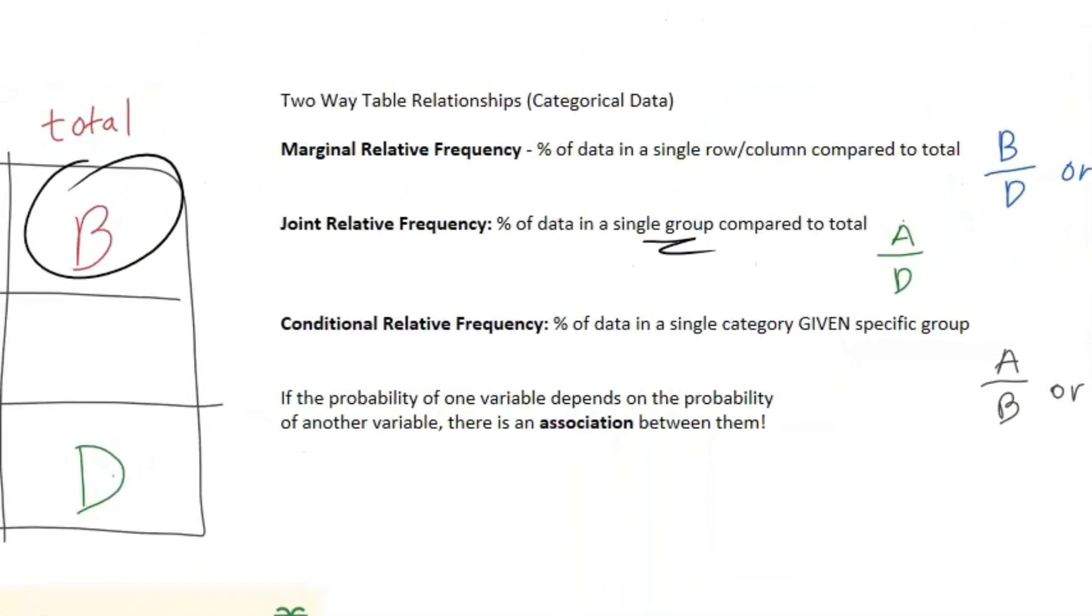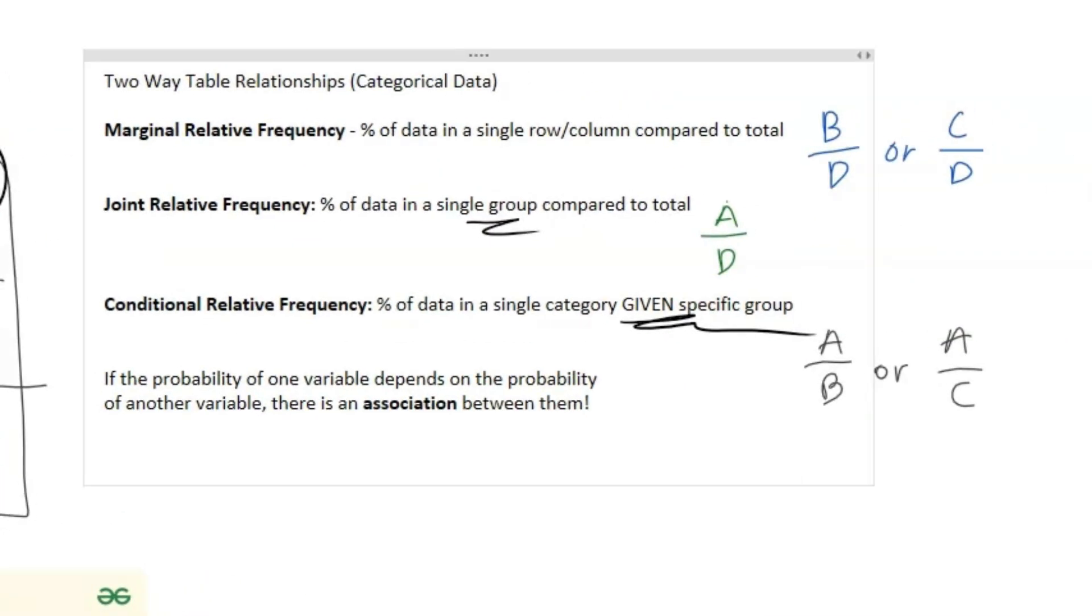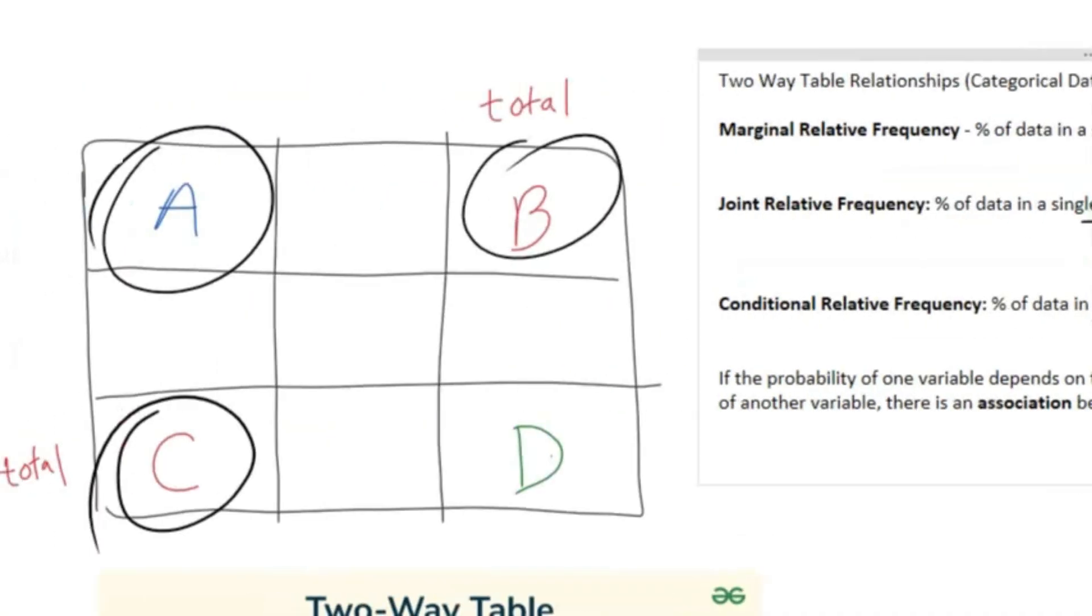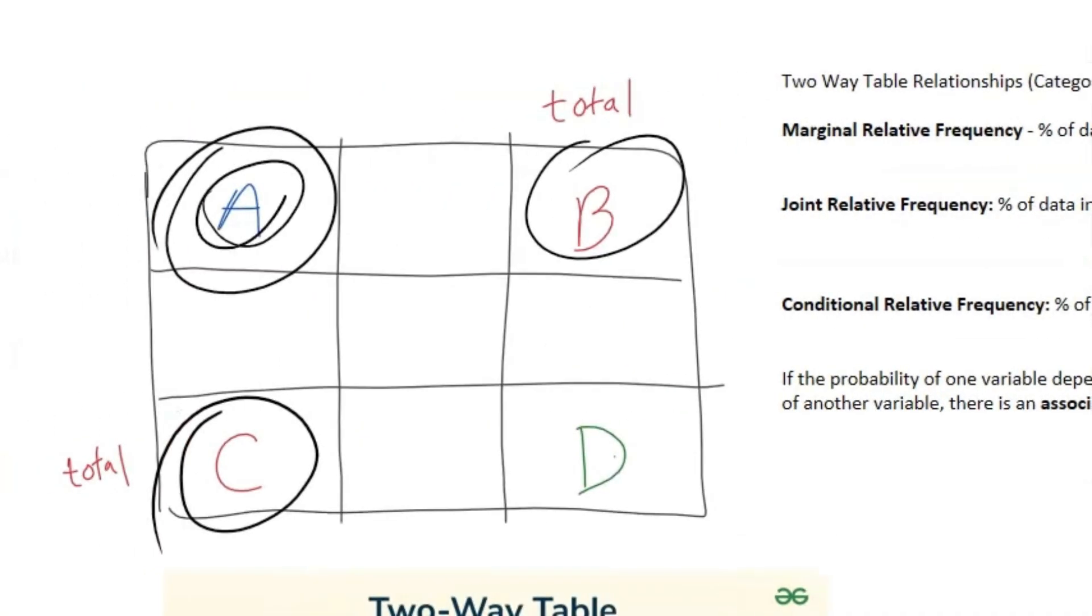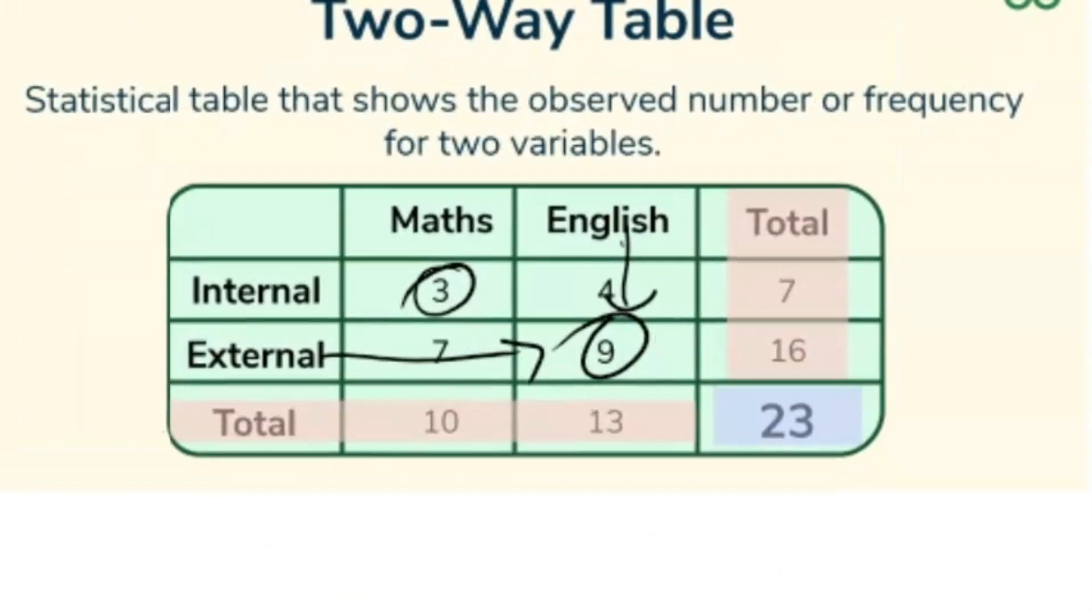Okay, so next we're going to talk about conditional relative frequencies. That's percentage of data in a single category when you're given a specific group. So now that we're going to be looking at A over B or A over C. Now, that's something like just A, and then the total in the group or column is just going to be A over C or A over B.